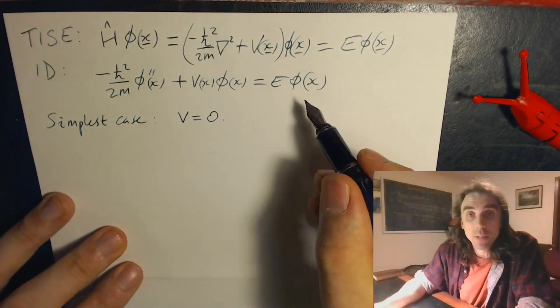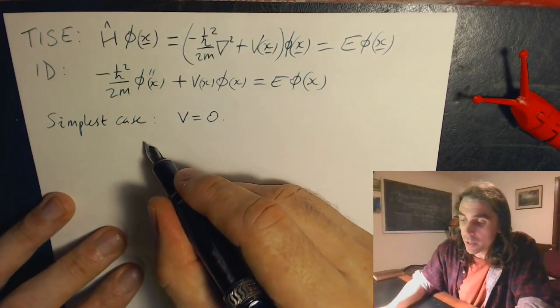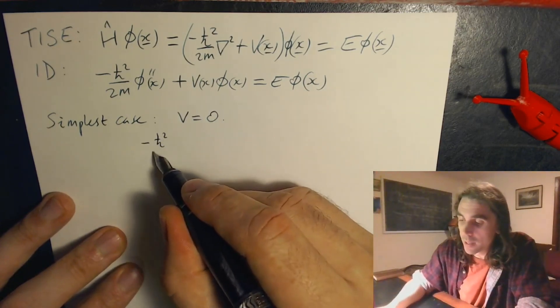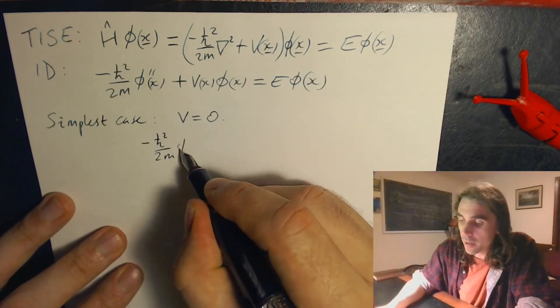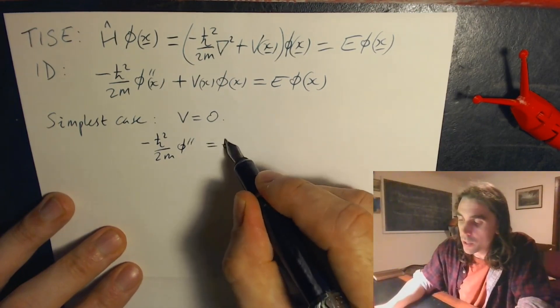When the potential is equal to zero, our time-independent Schrödinger equation just reads minus h bar squared over 2m phi double prime equals e phi.